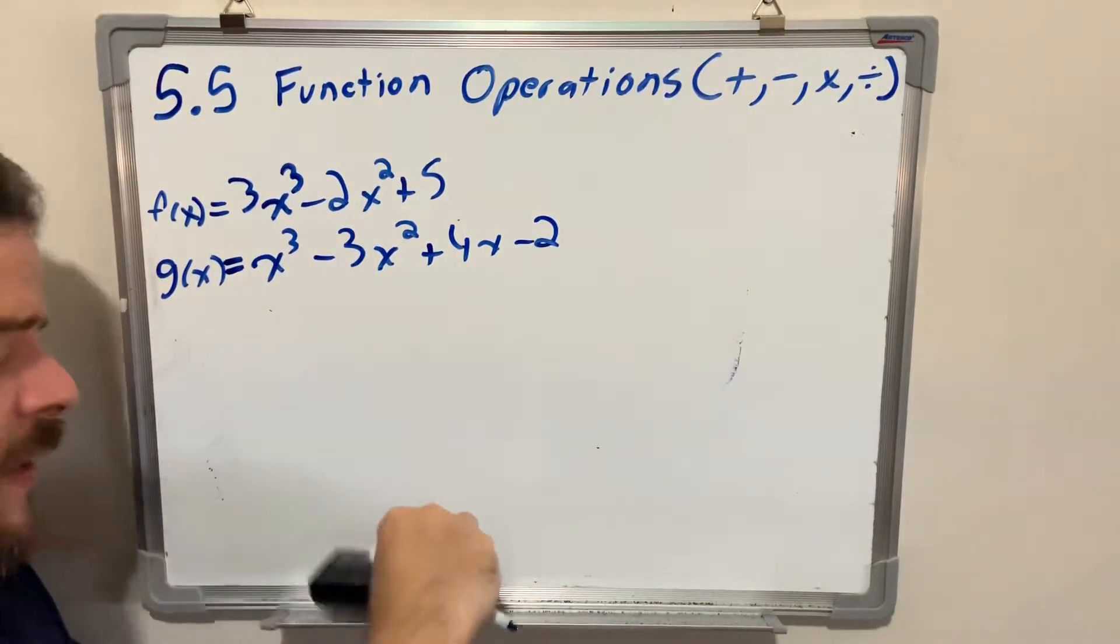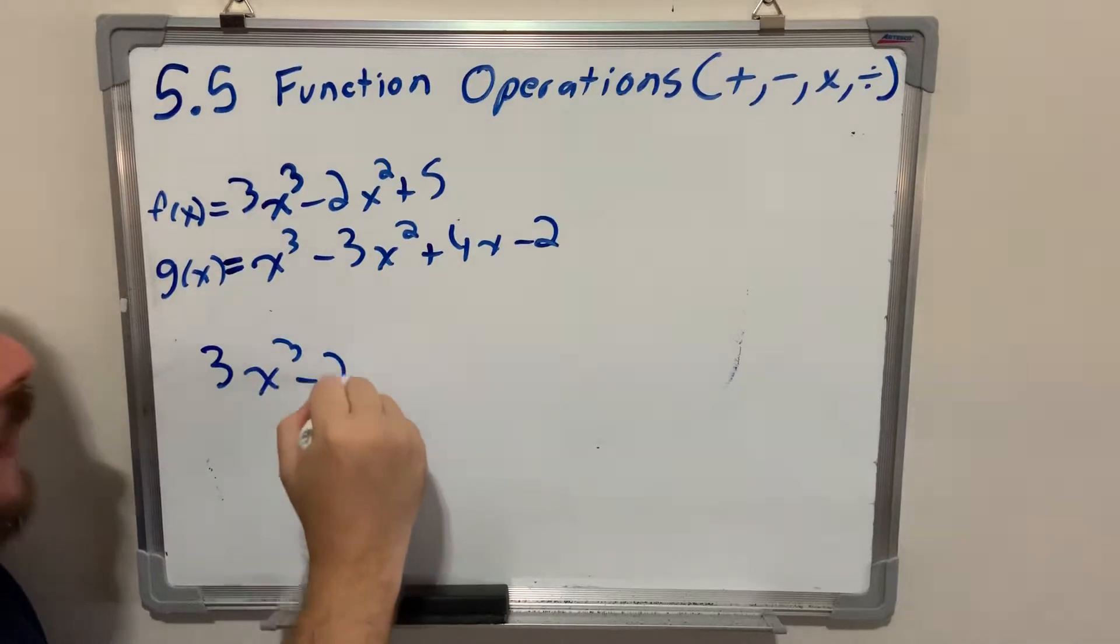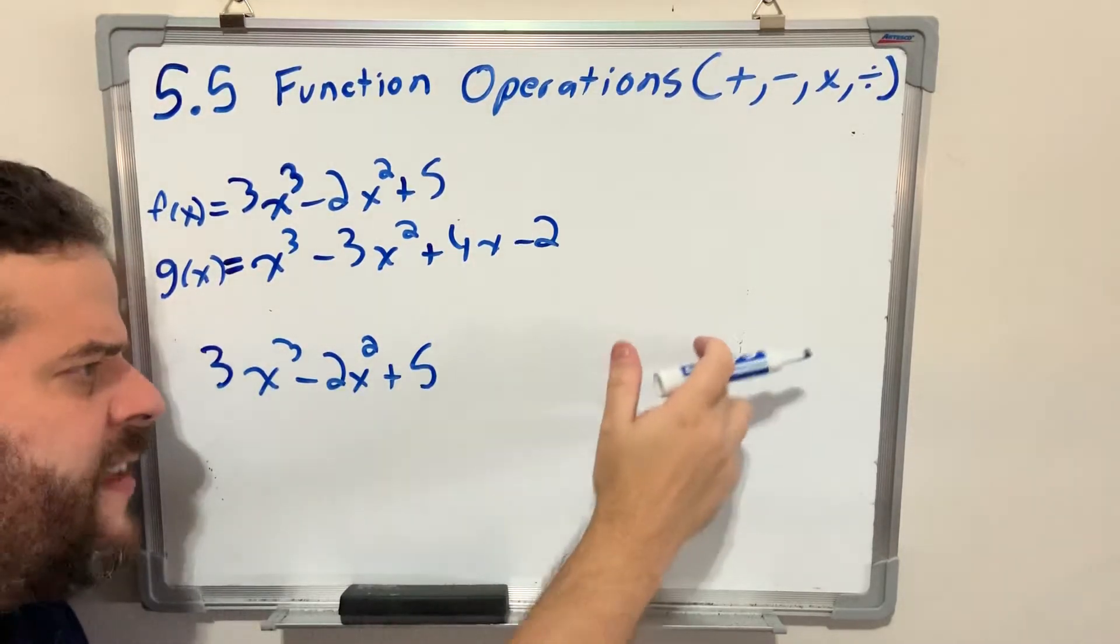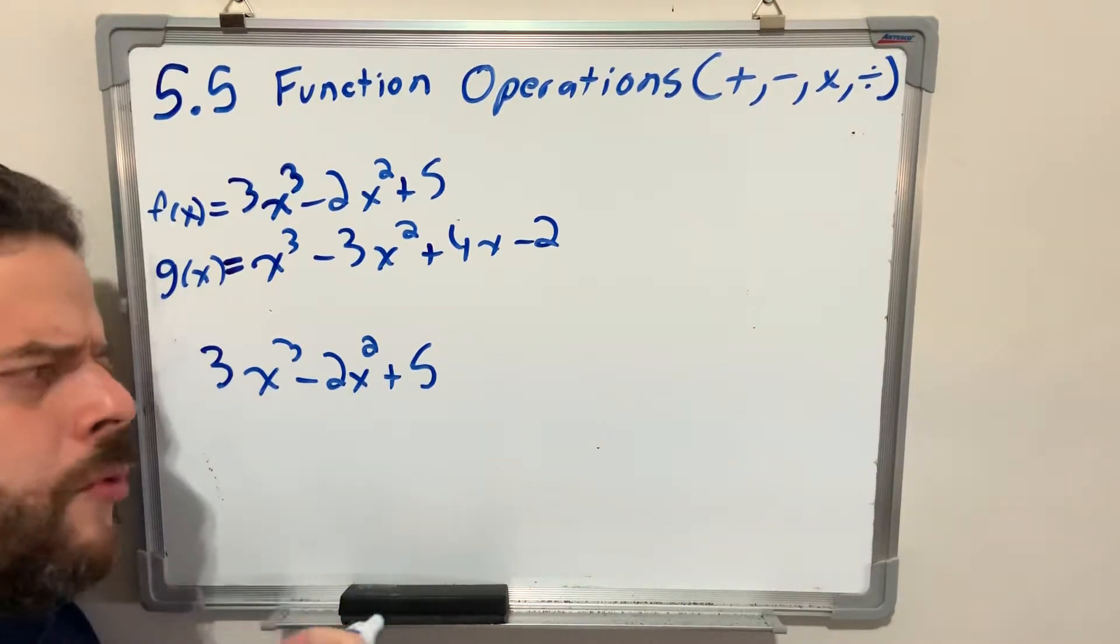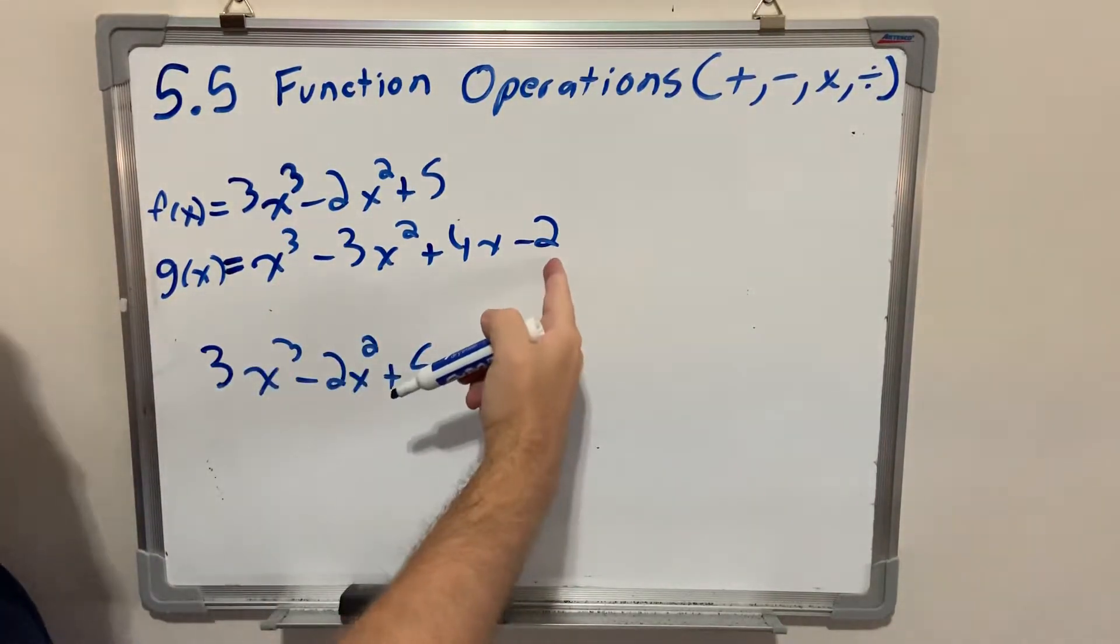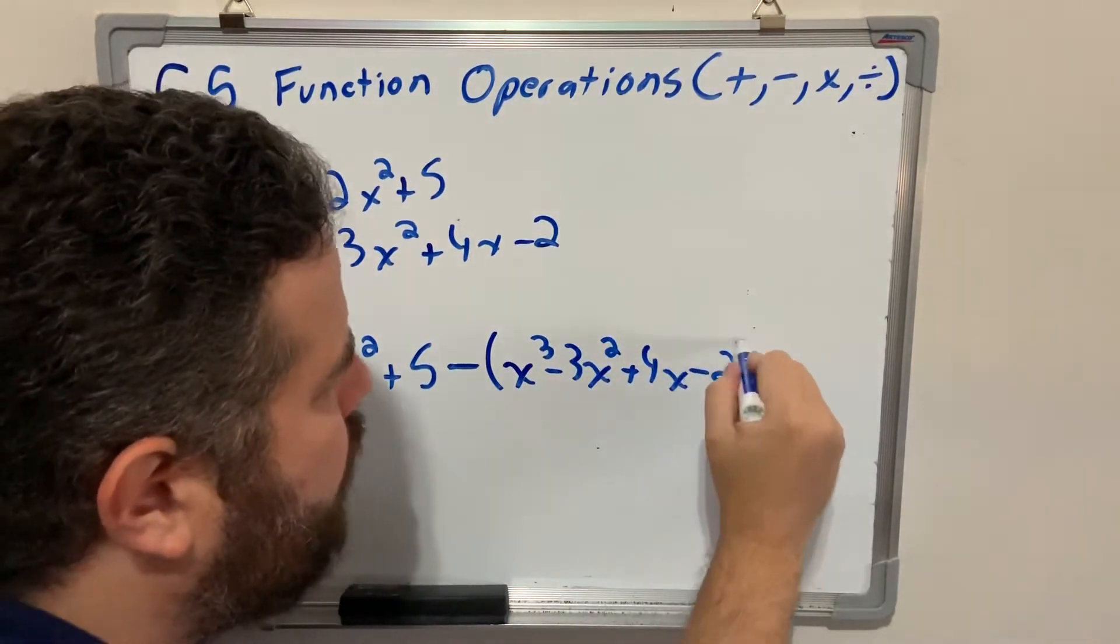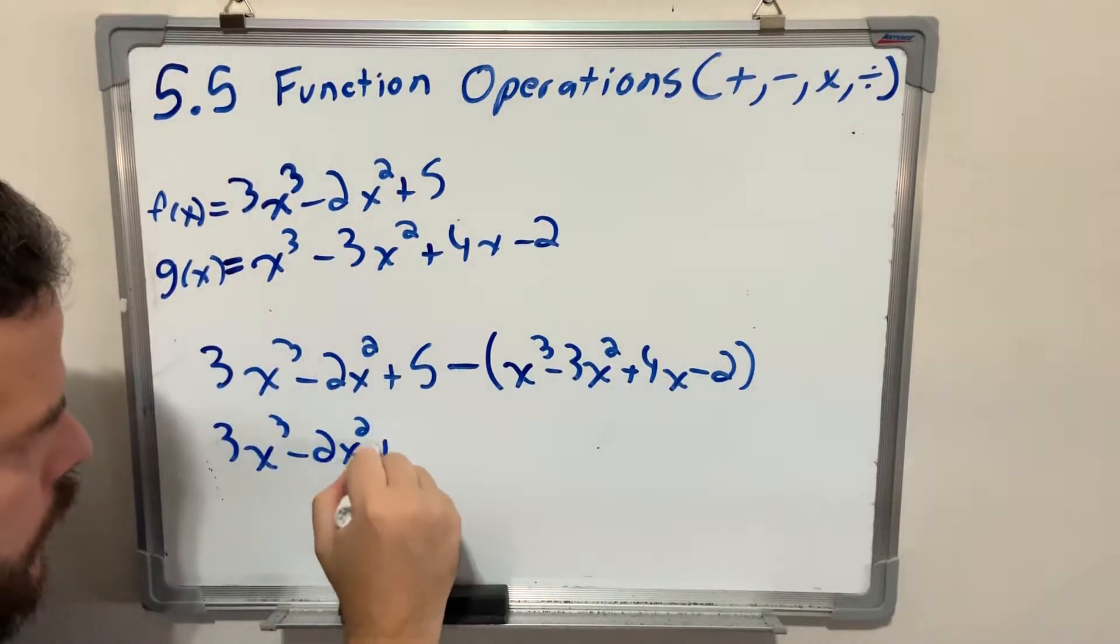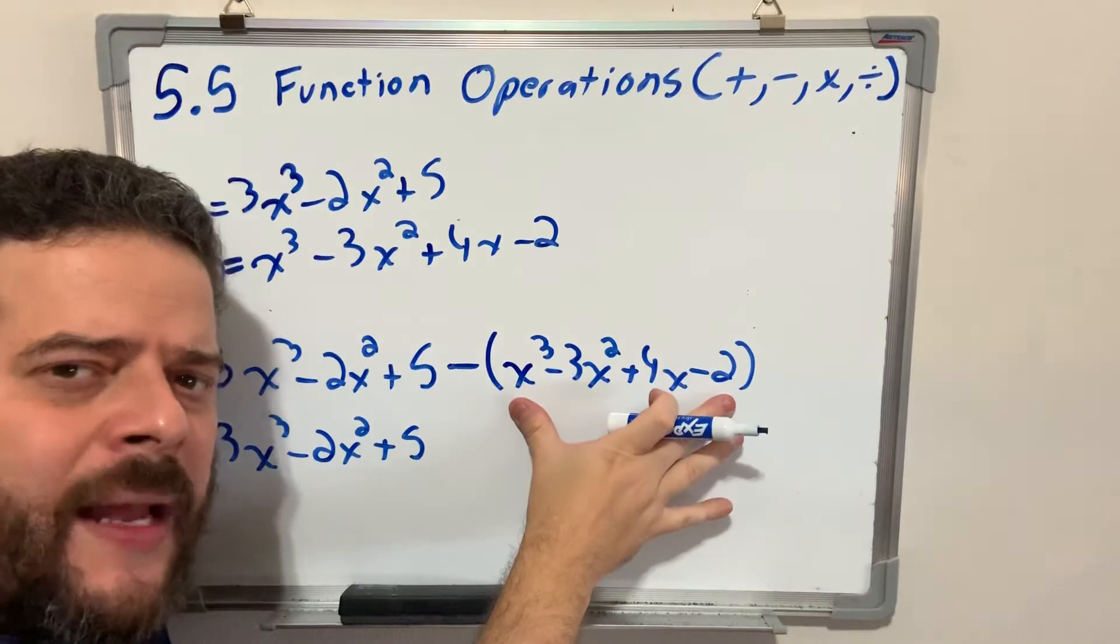Remember what I always tell you guys. Use parentheses. You don't have to use parentheses in the first one. 3x cubed minus 2x squared plus 5. Some people directly change the signs, that's fine. But to show all the processes and make sure you don't make a mistake, minus, open parentheses, write the other polynomial as is: x cubed minus 3x squared plus 4x minus 2. Now I'm going to rewrite my expression at the bottom.